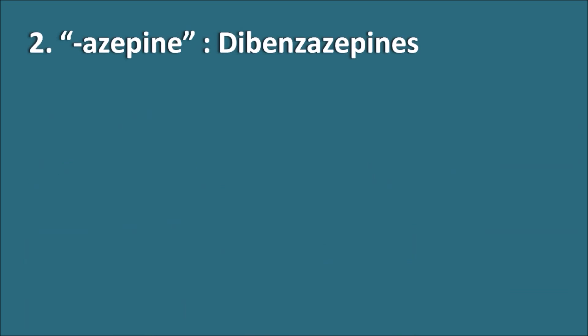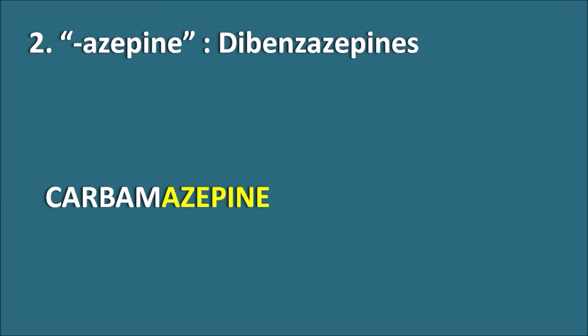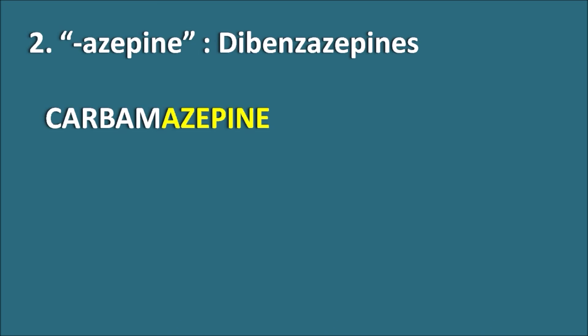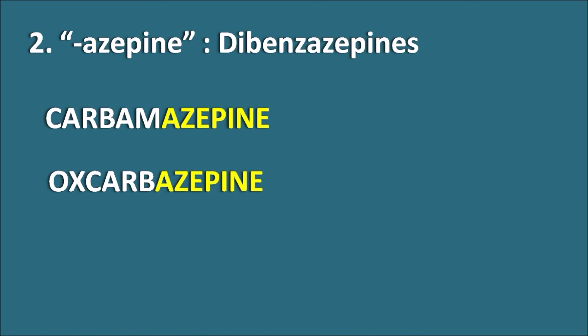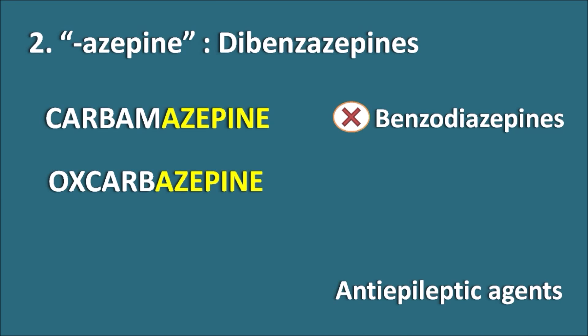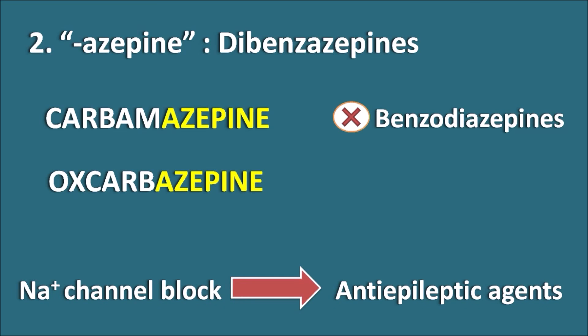Second, the suffix '-azepine' indicates they are the dibenzazepines. One drug in this category is Carbamazepine, which is an anti-epileptic drug. A similar drug is Oxcarbazepine. Both drugs share the same suffix '-azepine'. We should not confuse these drugs with the benzodiazepines, which are a different chemical category. Carbamazepine and Oxcarbazepine belong to the dibenzazepine category and are used as anti-epileptic agents — they block sodium channels, thereby producing their anti-epileptic action.